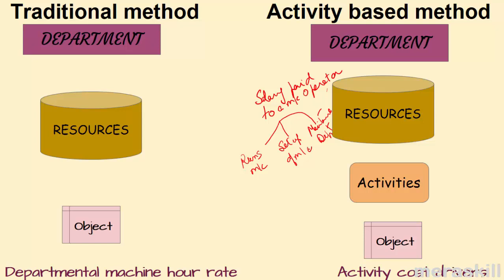So his salary of five thousand dollars might be split as: three thousand towards running the machine, one thousand in setting up the machine, and one thousand in the maintenance activity. One resource has been split activity-wise. Similarly, other costs of running the machine — power, oil — are grouped, while setup and maintenance are separate activities.